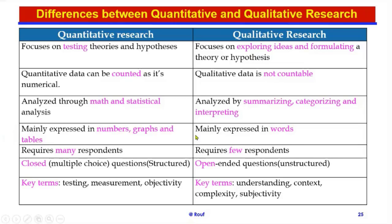On the other hand, qualitative research is mainly expressed in words or text. Difference number six: quantitative research requires many respondents, whereas qualitative research requires only few respondents.